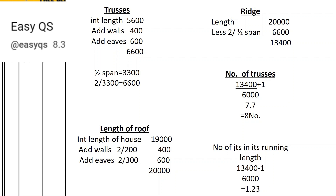At the hipped ends, we usually place trusses that make up the hipped ends, and the length occupied by the hip rafters is equal to half of the span on both ends of the house. So if half of the span is 3300, and the other end is also 3300, the two ends will make one full rafter span.